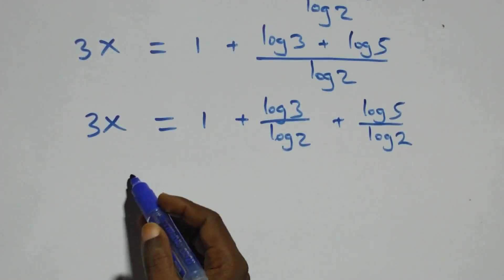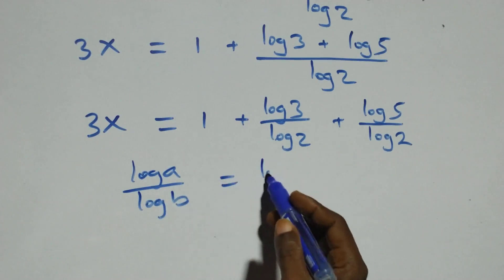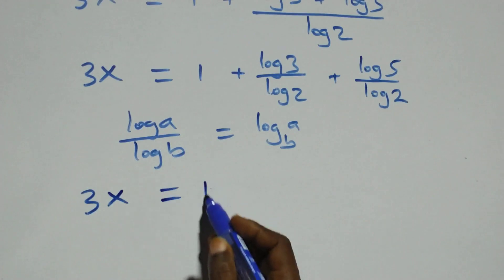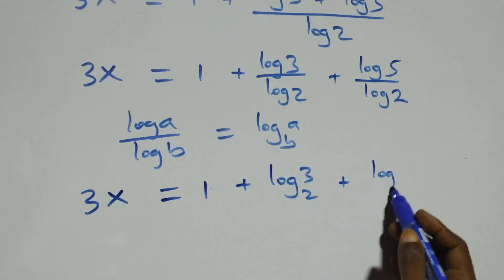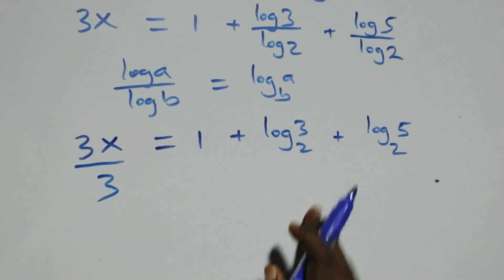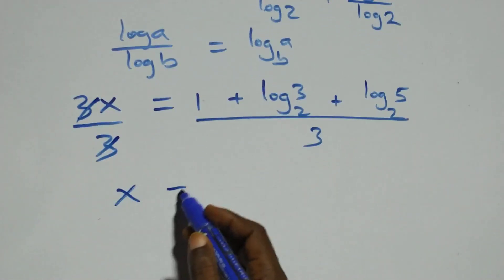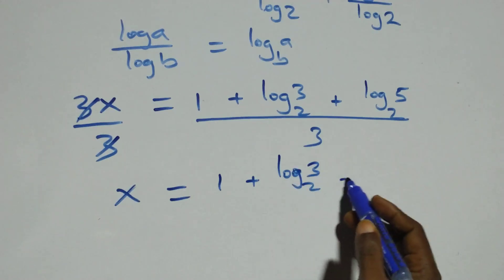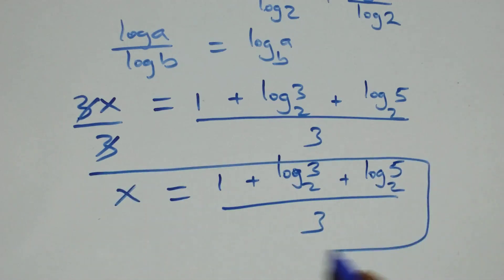We apply the change of base rule: log a over log b is the same as log a to base b. So three x equals one plus log three base two, plus log five base two. We then divide both sides by three — the threes cancel — giving x equals one plus log three base two plus log five base two, all over three.